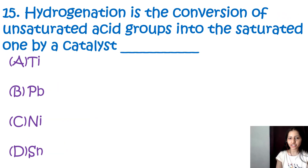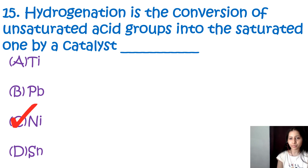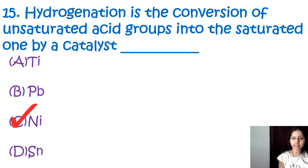Question number 15: Hydrogenation is the conversion of unsaturated acid groups into saturated ones by a catalyst — titanium, lead, nickel, or tin. The correct option is C, nickel. Hydrogenation is a process of conversion of unsaturated fatty acids to saturated ones, typically catalyzed by metals such as nickel, palladium, or platinum. Nickel is used as a catalyst mainly in the food industry.